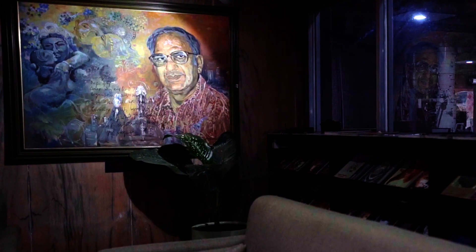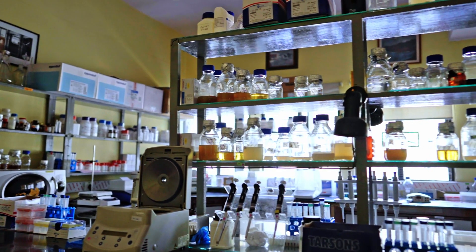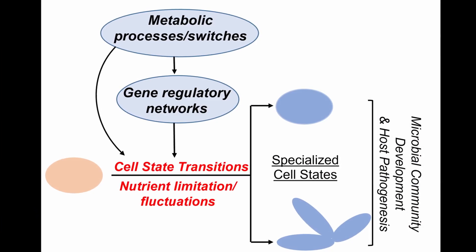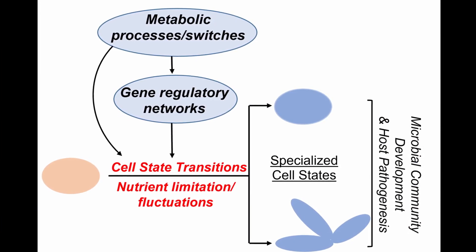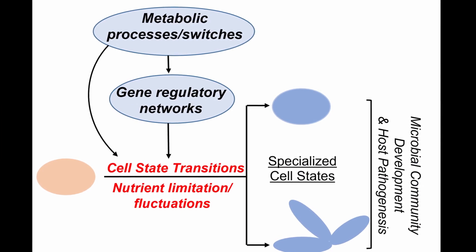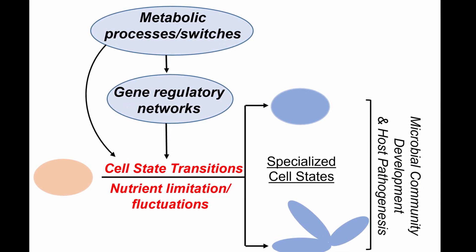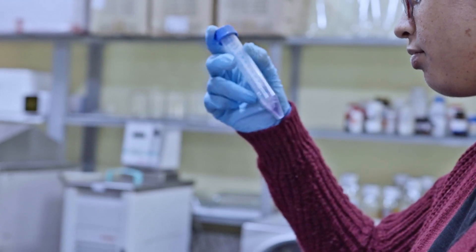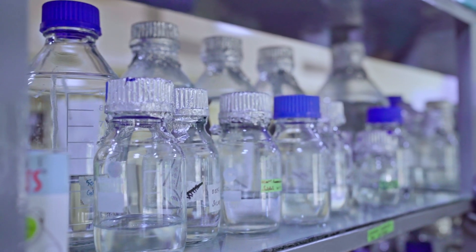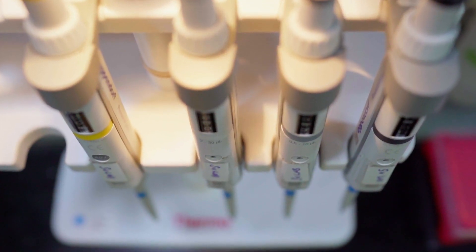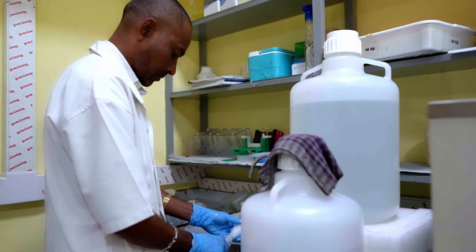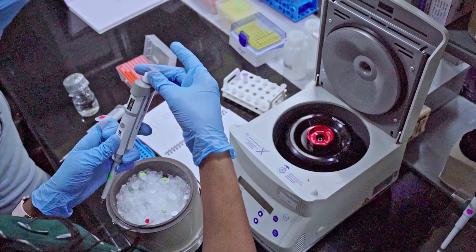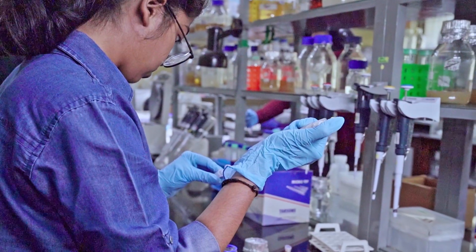Here at CCMB, my lab is primarily interested in understanding how something as fundamental as metabolism orchestrates cell state transitions in microbial systems. In response to fluctuations in their environment, microbes reversibly transition to alternate cell states that are specialized for growth and survival in these new environments. This ability to undergo reversible cell state transitions is not just critical for their survival, but allows them to colonize diverse niches and cause infections in a variety of hosts, including human beings.